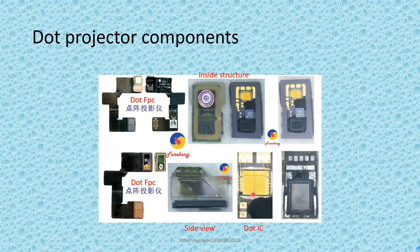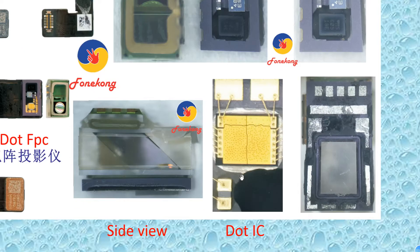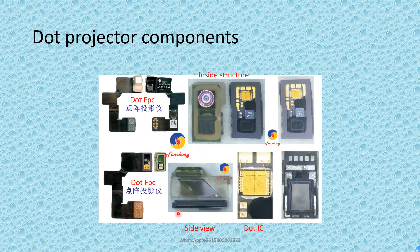This is the dot projector. It looks just like a face — look here. This is the face: left face, right face. Left eye, right eye — like this. It looks like a face. Back view, back side.